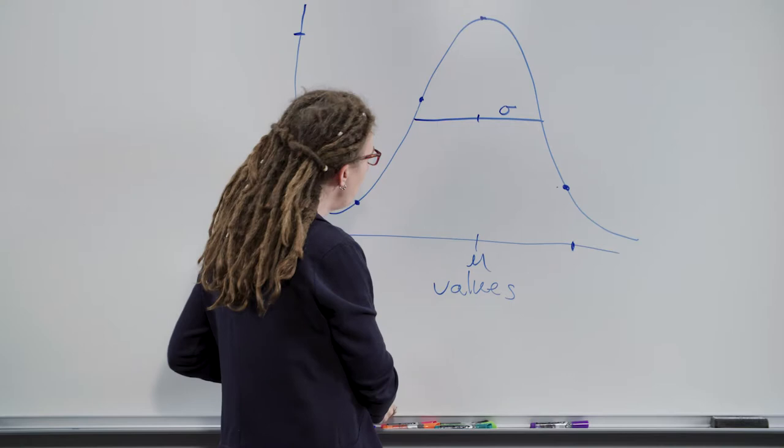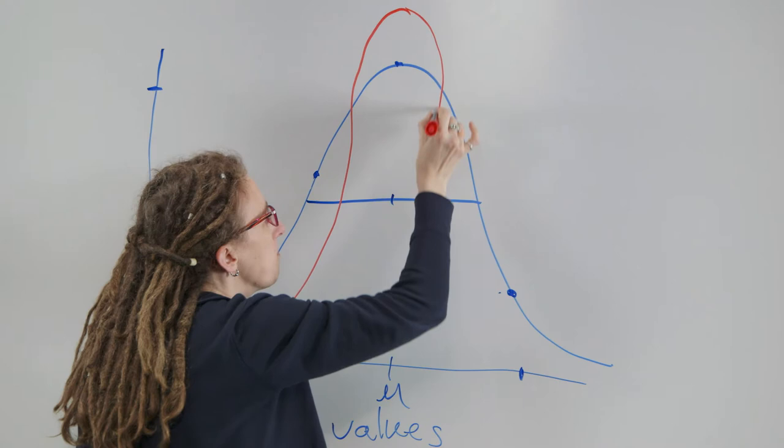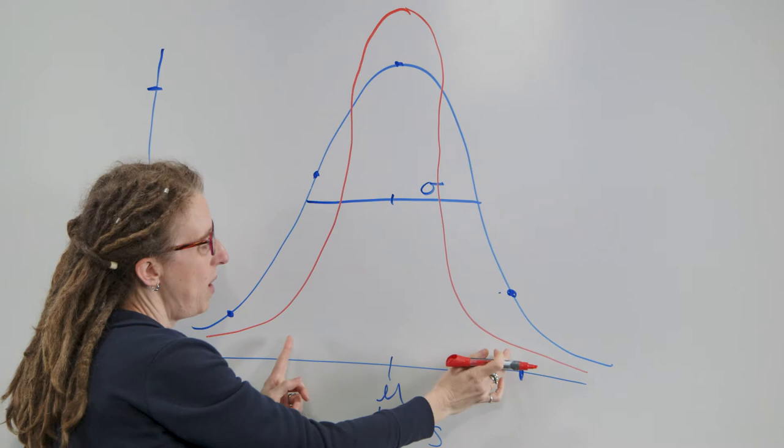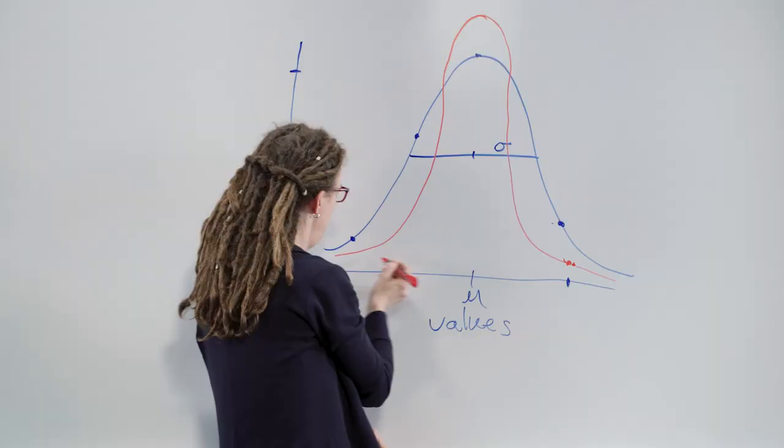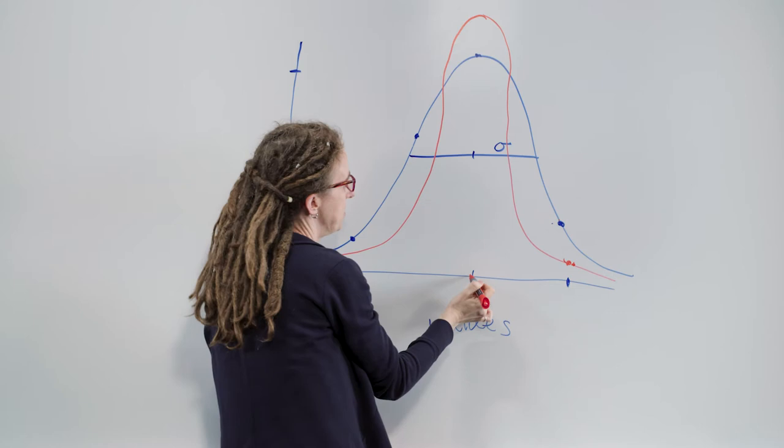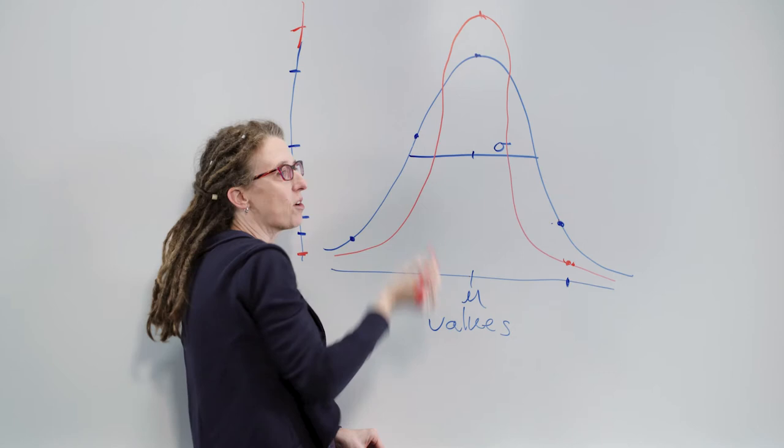And suppose we had another distribution that had the same mean, but it was narrower, meaning that seeing values farther away from the mean are even less likely. So to see this same value here is even lower on the vertical axis. And the chance of seeing the mean value here, even though it's the same mean value, the chance is even higher. It's way up here on the vertical axis.